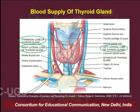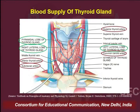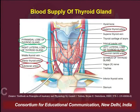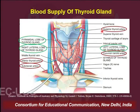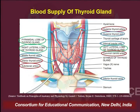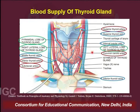Now let us understand the blood supply of the thyroid gland. There is a subclavian artery on the lower side of the gland which gives rise to the inferior thyroid artery, supplying blood to the thyroid. Also, there is a carotid artery which branches to give rise to the superior thyroid arteries, also supplying this gland. Regarding the veins, there is the inferior thyroid vein, the middle thyroid vein, and the superior thyroid vein, all of which open into the jugular vein and drain blood away from the thyroid gland.